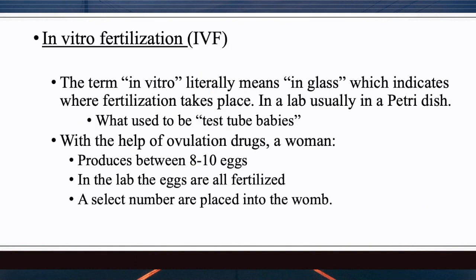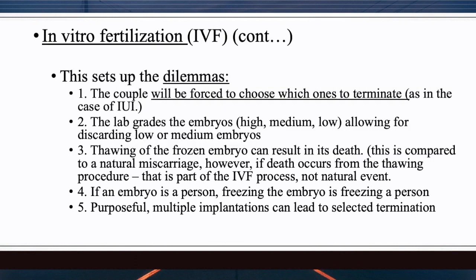In vitro fertilization (IVF): the term 'in vitro' literally means 'in glass,' indicating fertilization takes place in a lab, usually in a petri dish where eggs are placed and sperm is added to fertilize them — what used to be called 'test tube babies.' With ovulation drugs, a woman can produce eight to ten eggs, and up to ten eggs can be fertilized in the lab, creating up to ten embryos. From a biblical viewpoint, each embryo is a person, so there needs to be a selection of which fertilized eggs will be placed in the womb.